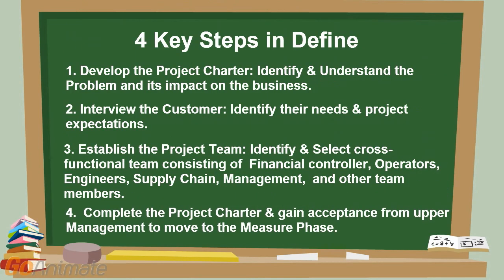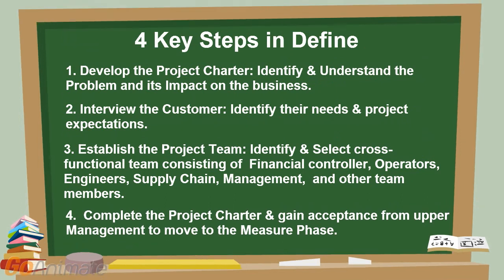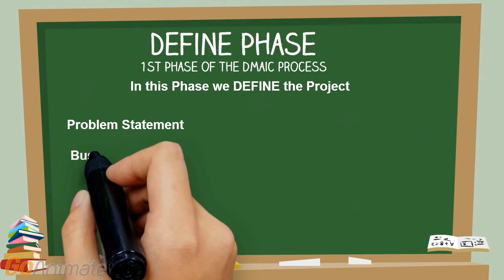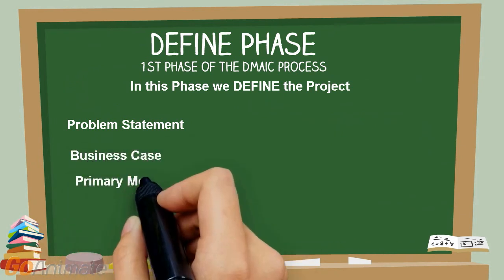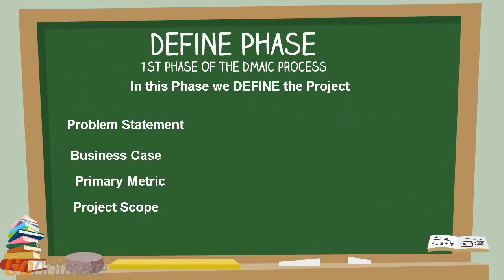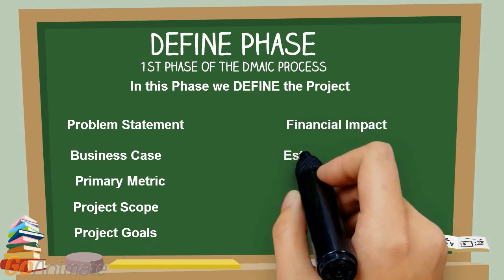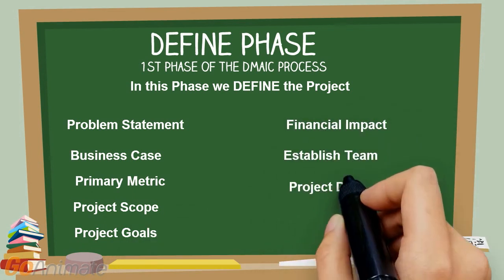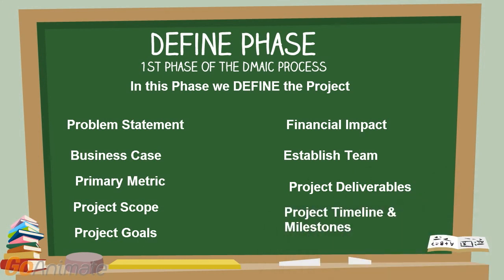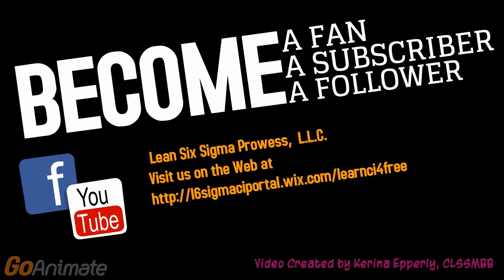Step 4: Complete the Project Charter and gain acceptance from upper management to move to the Measure Phase. At the end of this phase, you will have completed all of the elements of the Project Charter, including: problem statement, business case, primary metric, project scope, project goals, financial impact, established team, project deliverables, and project timeline and milestones. We hope that you have enjoyed this introductory module.